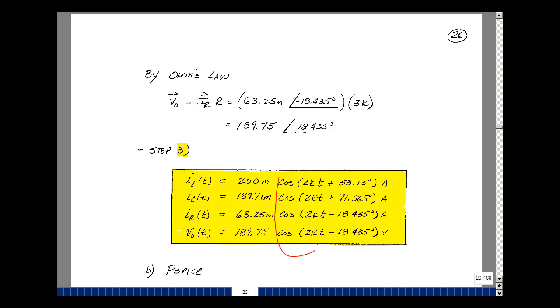So I've got 200 milli, cosine of 2K t plus 53.13 degrees amps. For I sub C, 189.71 milli, cosine of 2K t plus 71.565 amps.